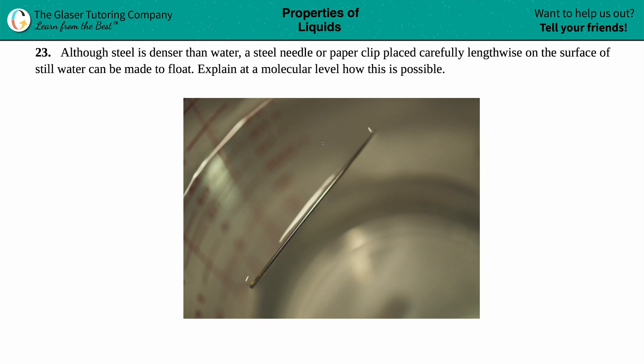Number 23. Although steel is denser than water, a steel needle or a paperclip placed carefully lengthwise on the surface of still water can be made to float. Explain at a molecular level how this is possible.